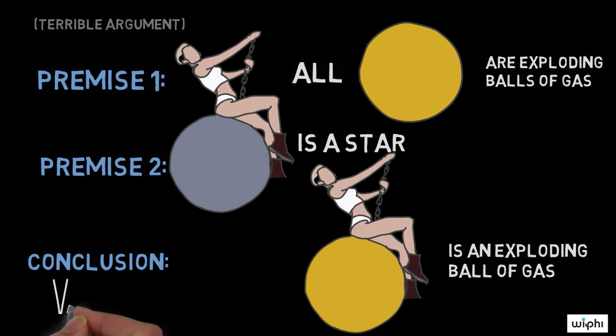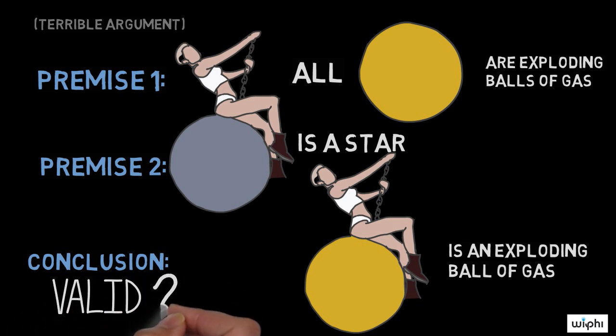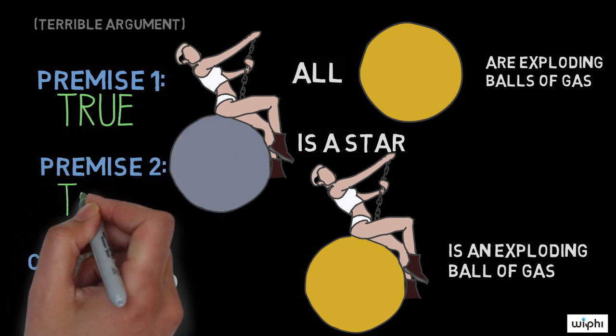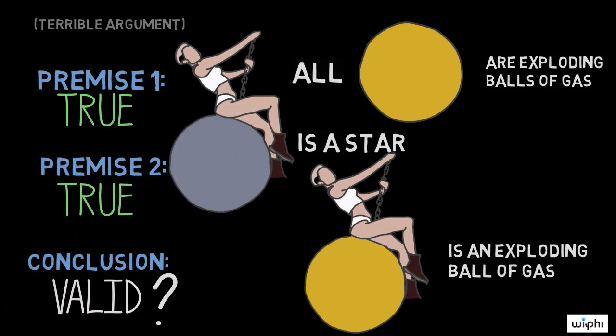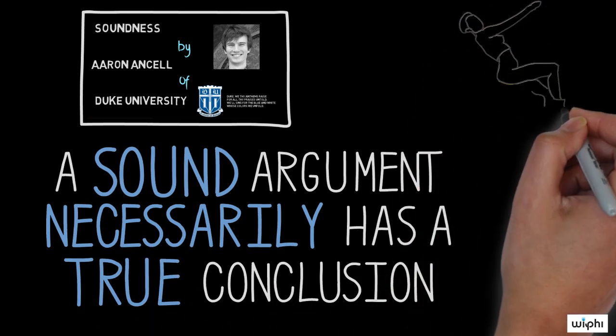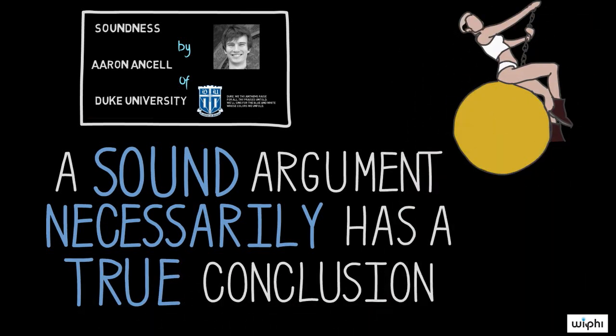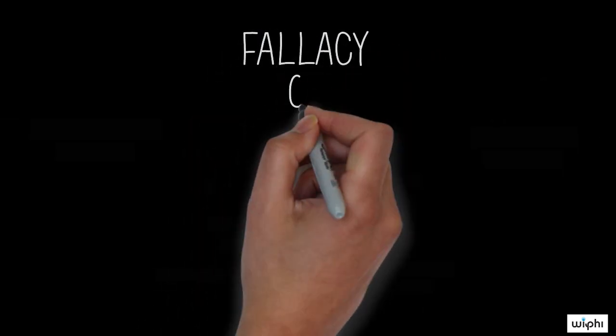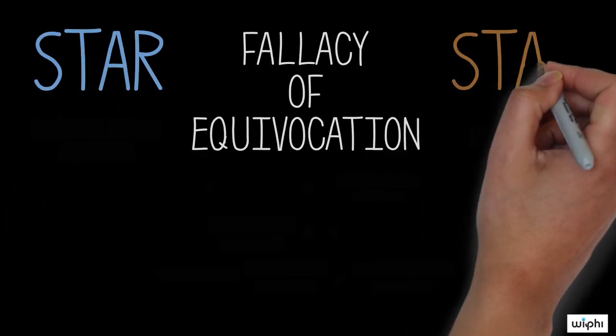While this is clearly a terrible argument, the form of this argument appears to be valid. And each of the premises, when considered individually, is true. You might recall from a previous video that an argument with a valid form and true premises is considered sound, and that a sound argument necessarily has a true conclusion. But you're probably not convinced that Miley Cyrus is an exploding ball of gas, and you're right to think that the logic is flawed. So what's wrong with this argument? This argument commits the fallacy of equivocation.